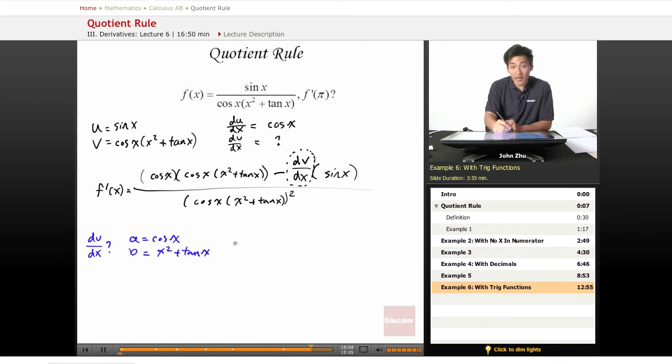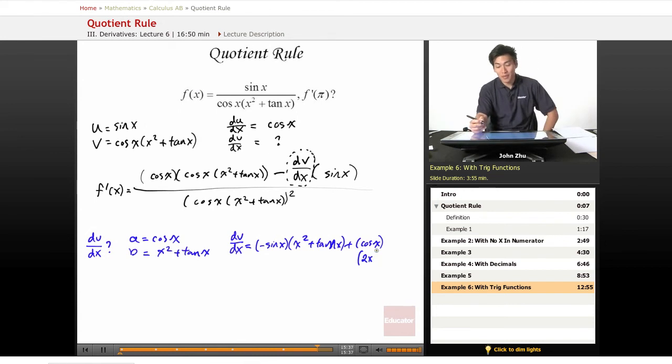By applying the product rule, we know that the derivative of v equals derivative of a, which is negative sine of x times the second portion b, plus a times the derivative of b, which we can apply with a trig definition of derivatives and the power rule.